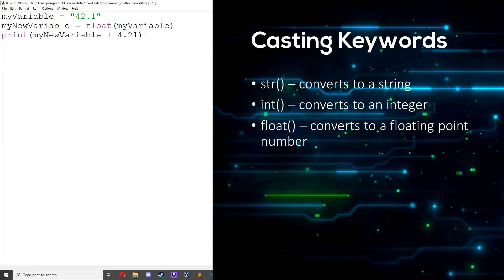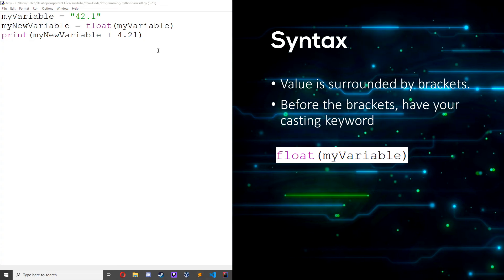So to recap: to convert something to a string, it's str; to convert it into an integer, it's int; and to convert something to a floating point number, you use float. The syntax is: have your variable, surround it in brackets, and then put your conversion keyword before it — for example, int or float.